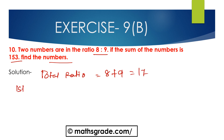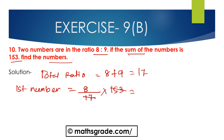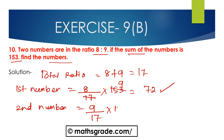The first number will be 8/17 multiplied by 153. Cancelling 17 and 153 — since 17 × 9 = 153 — we get 8 × 9 = 72. The second number will be 9/17 multiplied by 153. Since 17 × 9 = 153, we get 9 × 9 = 81. So the two numbers are 72 and 81.